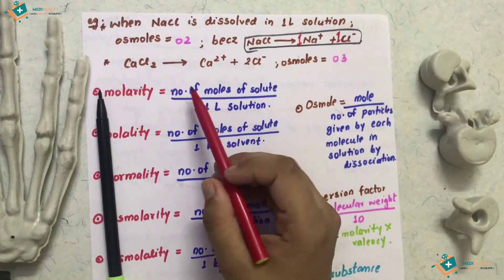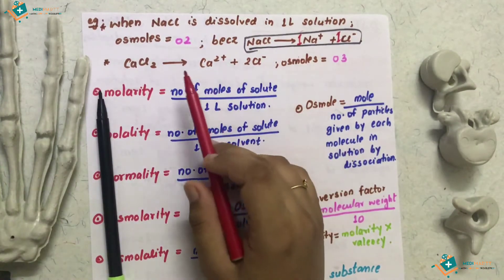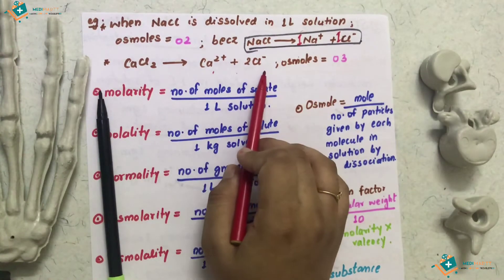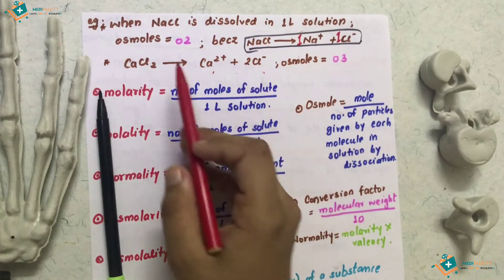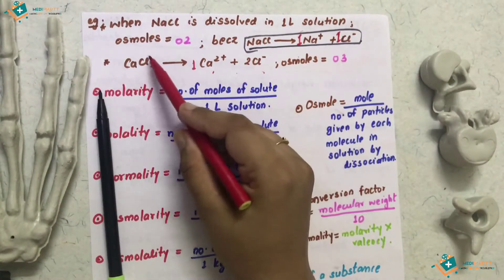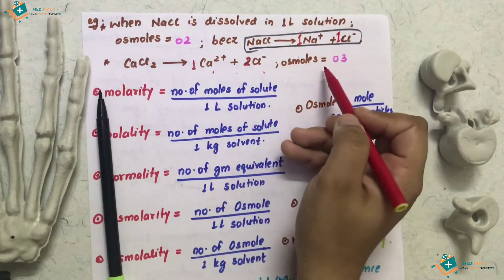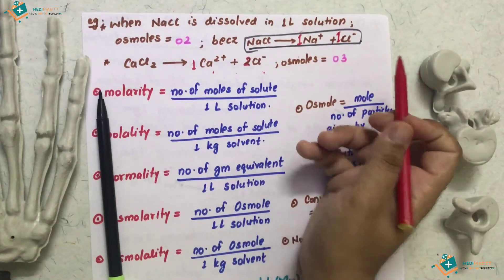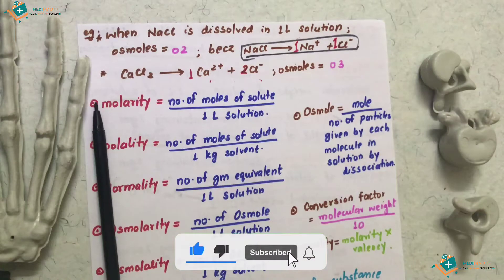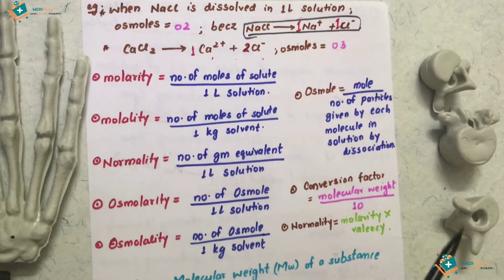For example, take calcium fluoride, CaF2. When dissolved in 1 liter of solution, it dissociates into Ca²⁺ and 2 Cl⁻ — that is Ca²⁺ plus 2F⁻. We balance this and count the particles: 1 Ca²⁺ and 2 F⁻ gives us 3 particles, so 1 mole of CaF2 gives 3 Osmol.